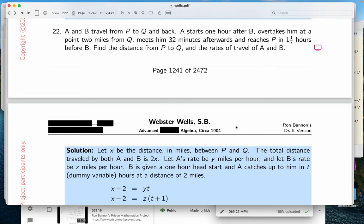Okay, so we're still in exercise 69, and this is problem number 22. A and B travel from P to Q and back. This reminds me of question number 21, by the way. A starts one hour after B, overtakes him at a point two... It's tough. I know that it's tough for reading through. I do know from experience, I've been teaching for my fourth decade of teaching, that a lot of students when they're reading these problems they get horribly lost.